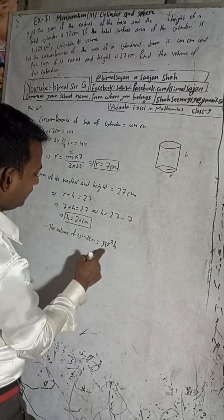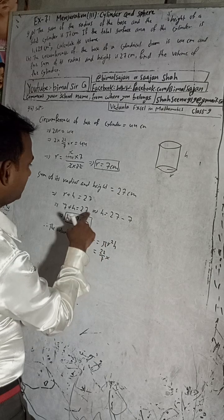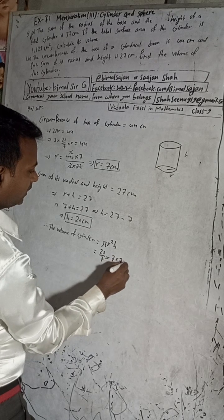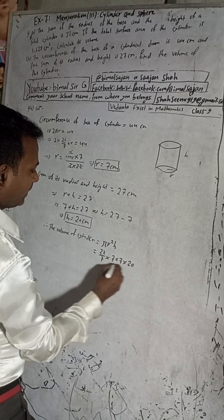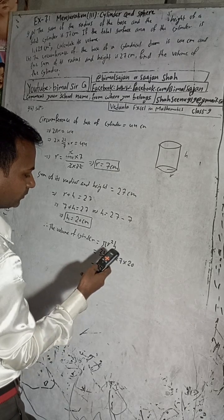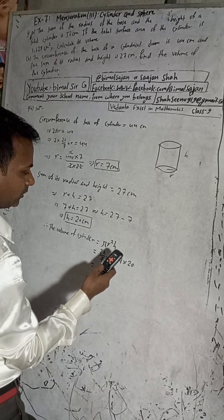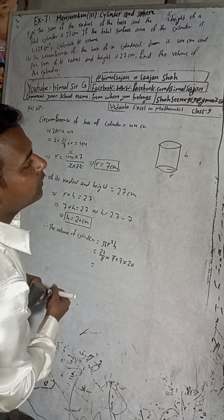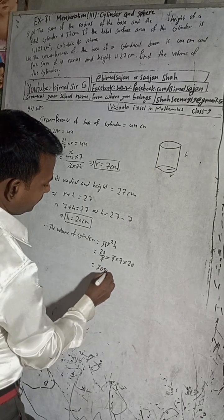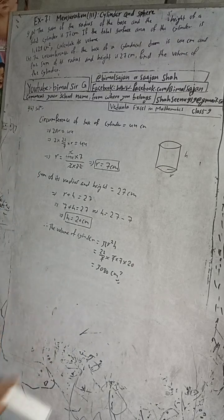So the volume is πr²h = (22/7) × 7² × 20 = (22/7) × 7 × 7 × 20. The 7 cancels, giving 22 × 7 × 20 = 3080. The volume is 3080 cm³.